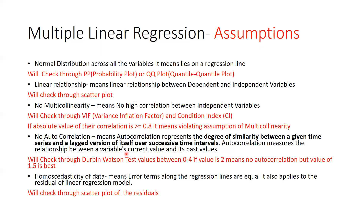Autocorrelation measures the relationship between a variable's current value and its past values. How do we check autocorrelation? Through the Durbin-Watson test, which I had already explained in my SPSS video. This test value should be between 0 to 4, but a value of 2 means no autocorrelation, and 1.5 is considered the best value.